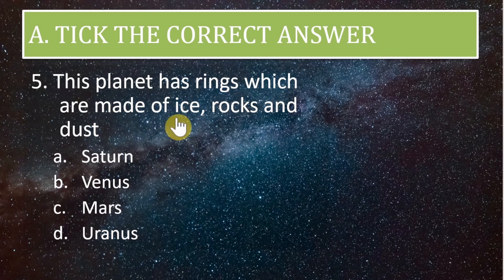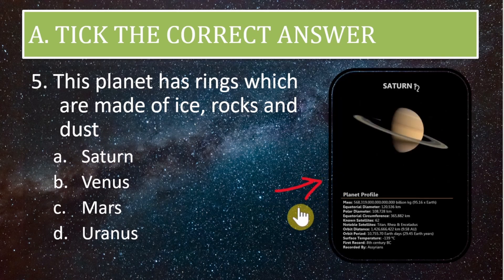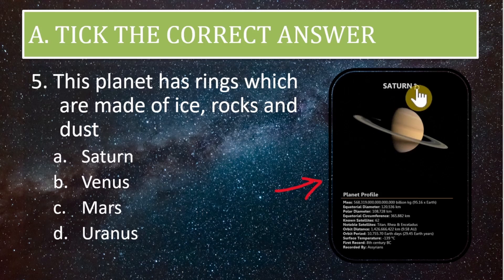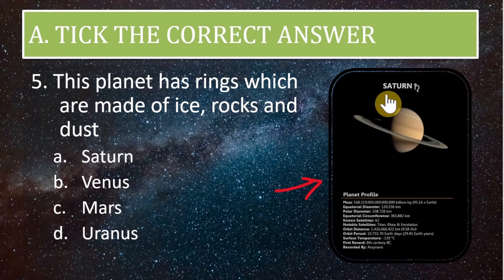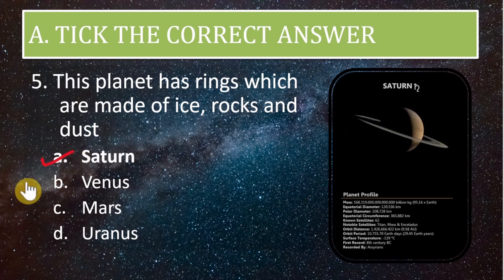Fifth MCQ: this planet has rings which are made of ice, rocks, and dust. Have you identified the planet? The correct answer is Saturn.